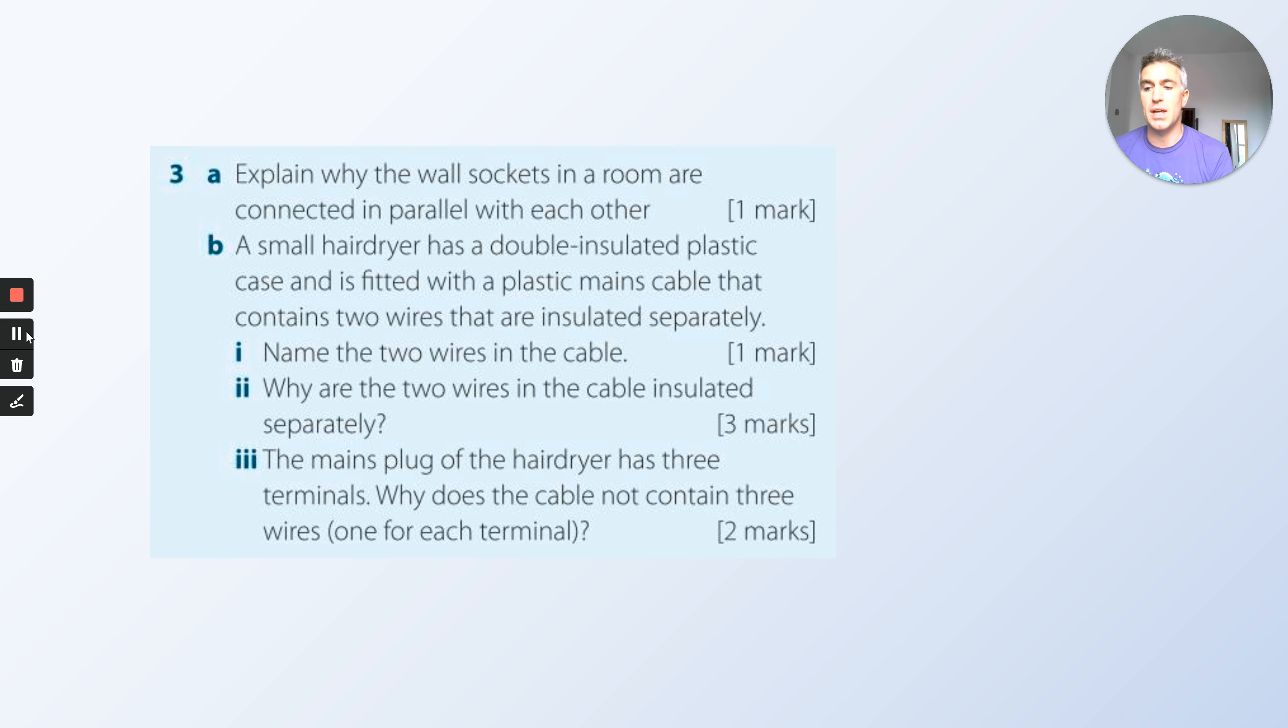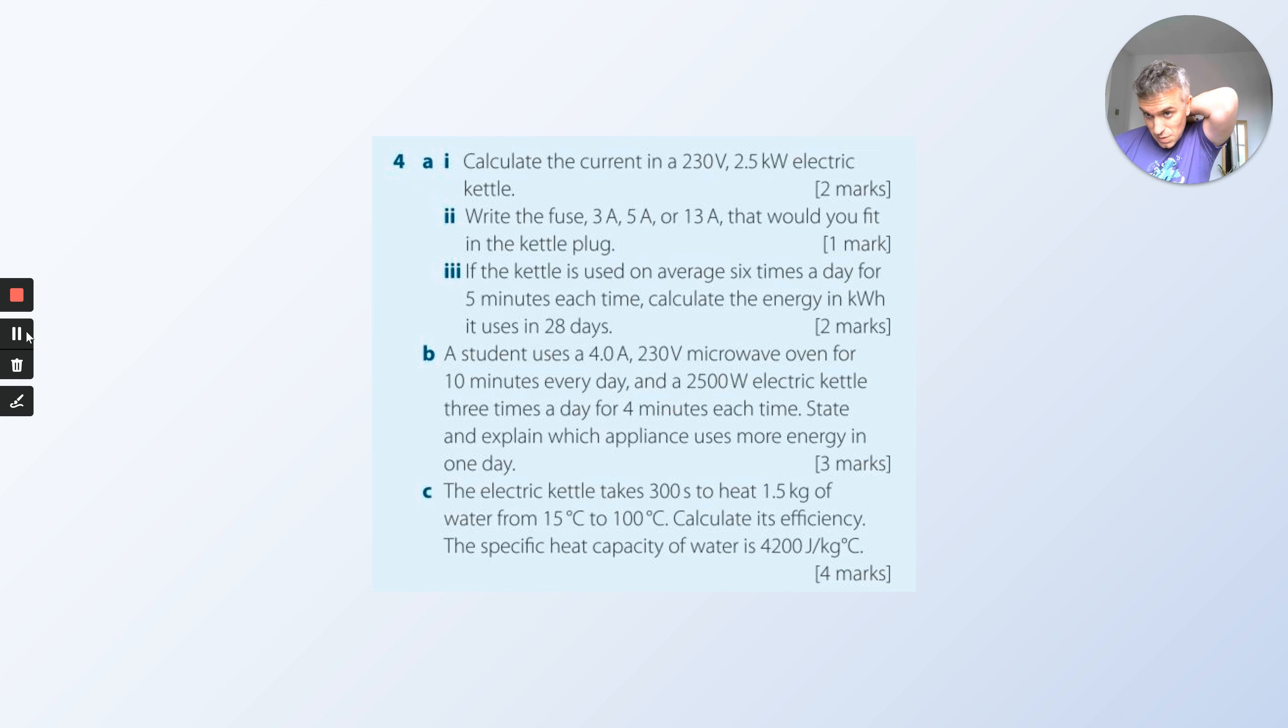The mains plug of the hairdryer has three terminals. Why does the cable not contain three wires, one for each terminal? Think about your hair dryer. What is it made from? What's the outside made from? That's going to tell you the answer for why there's only two and not three.